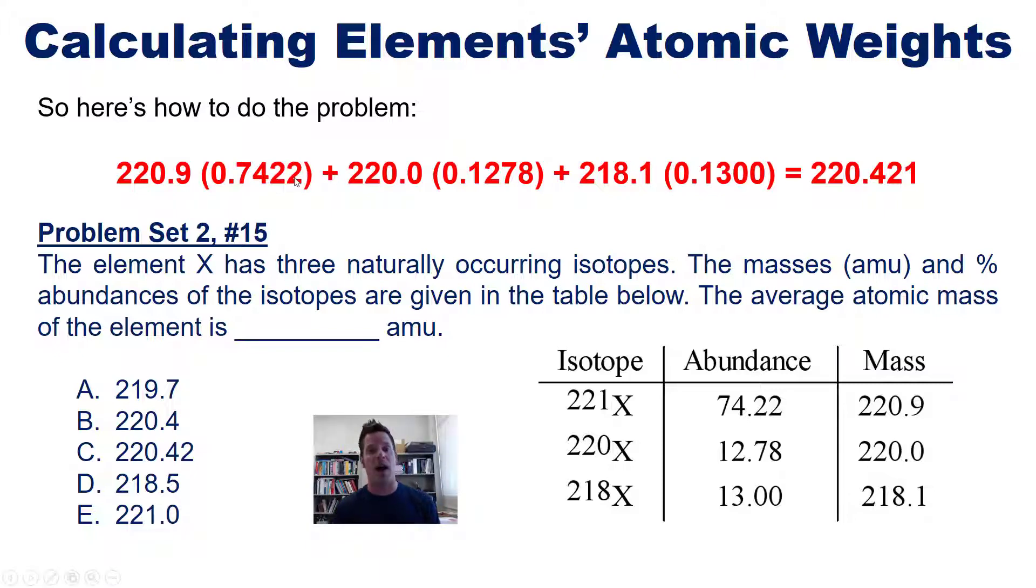Now, to get the correct answer, we have to use our significant figure rules, which we learned in an earlier video linked in the description below, and do our appropriate rounding. You'll notice that each of these individual mathematical manipulations are multiplications. So when we multiply all of these through, we have to round the resulting number from each individual multiplication to have the same number of significant figures as whichever term has the fewest significant figures, according to our multiplication division rule. Now, comparing all these terms, you can see that each one has four significant figures.